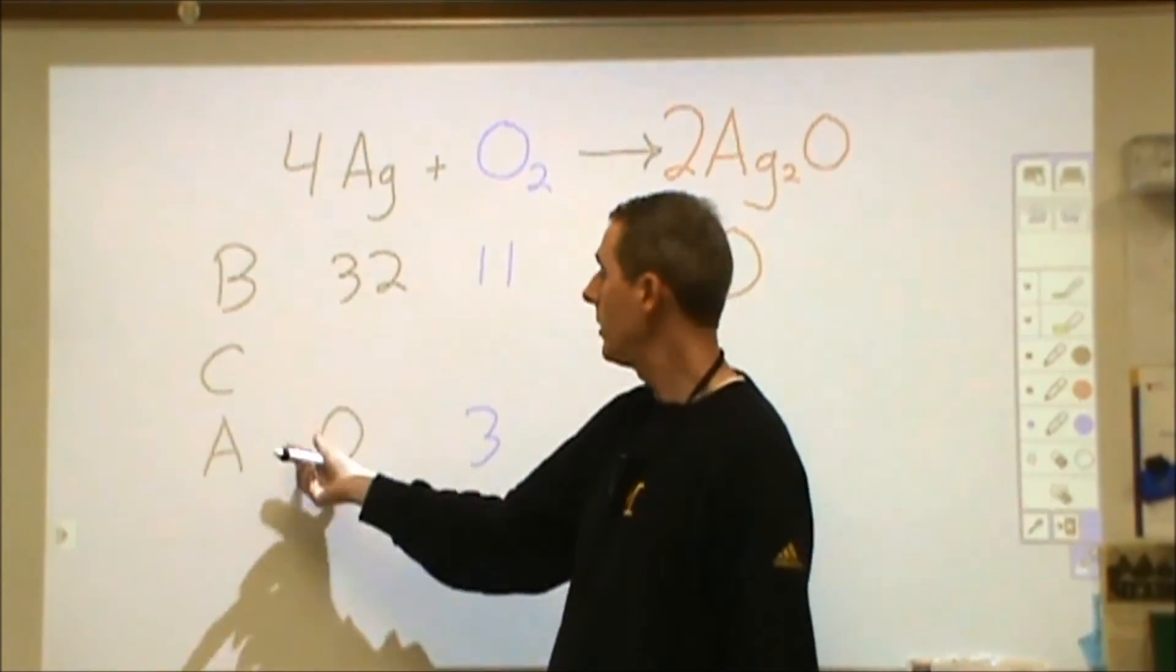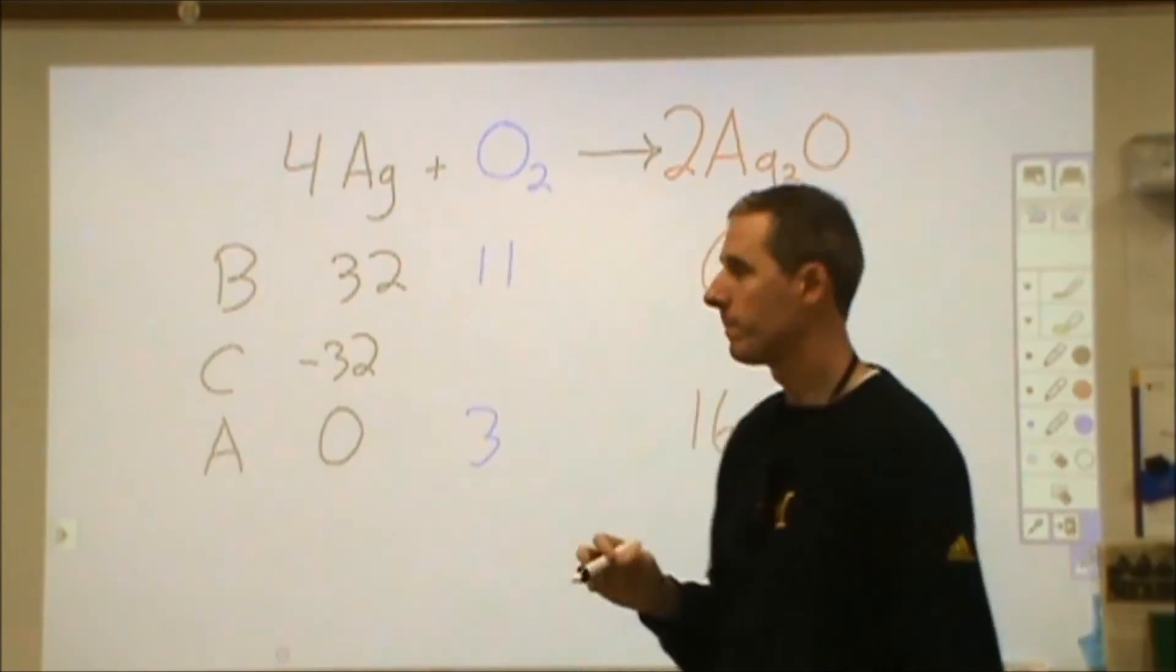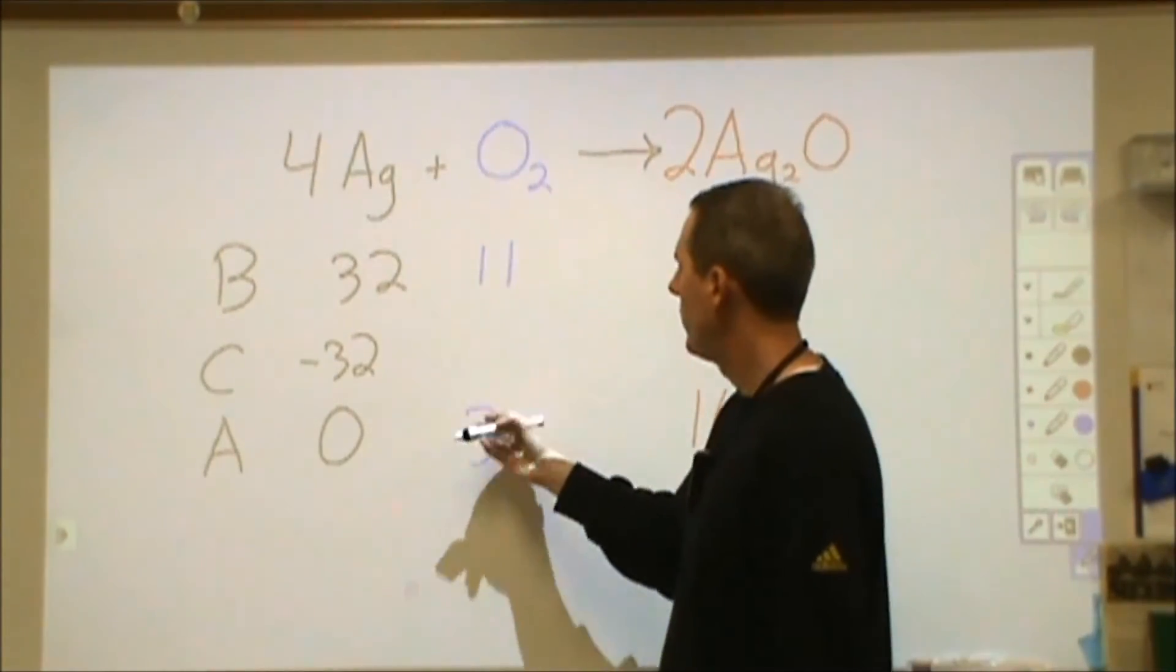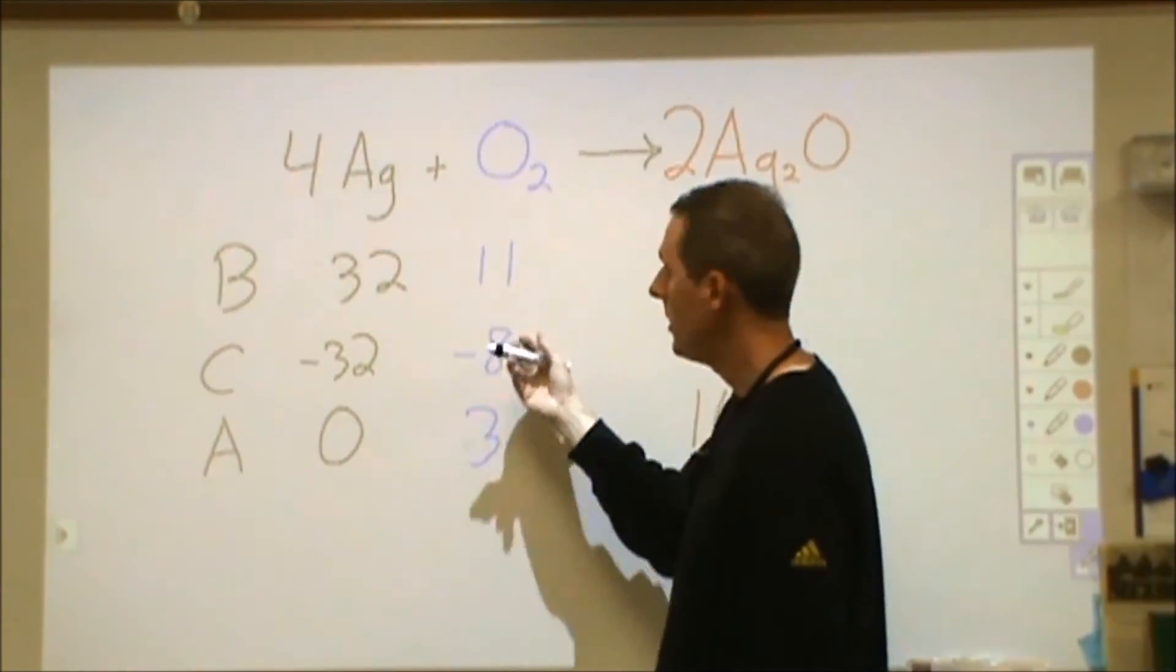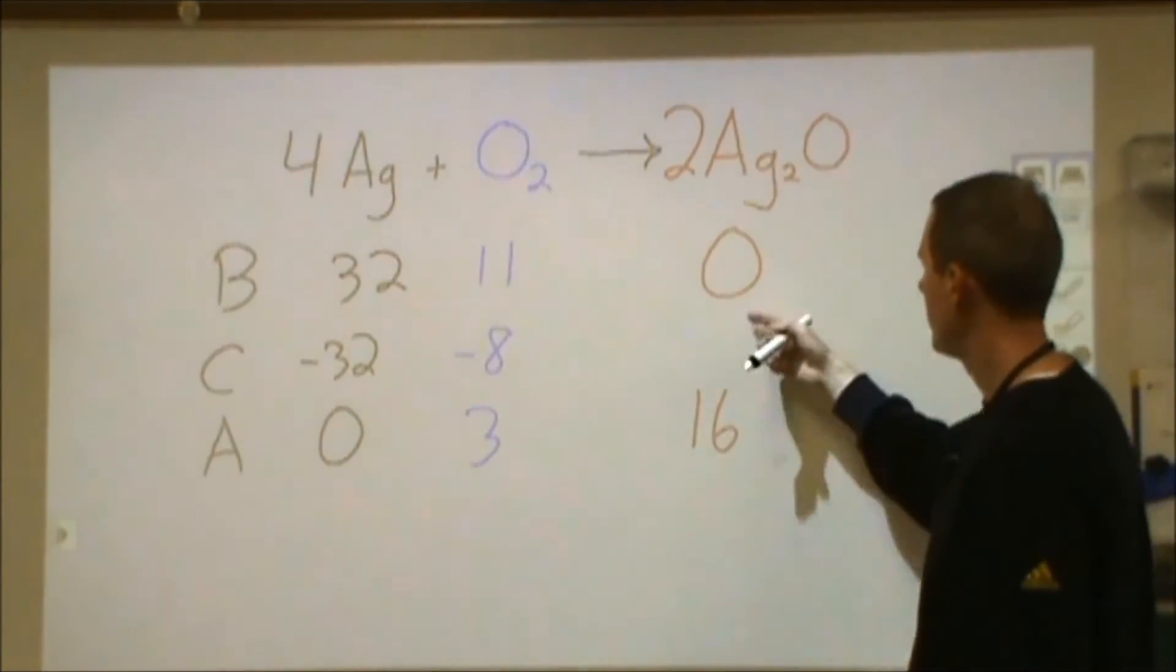So for example, silver started with thirty-two moles and ended with zero. So it changed by decreasing by thirty-two moles. The oxygen started with eleven and ended with three. So it changed by decreasing by eight moles. And the silver oxide went from zero to sixteen, so it increased by sixteen.